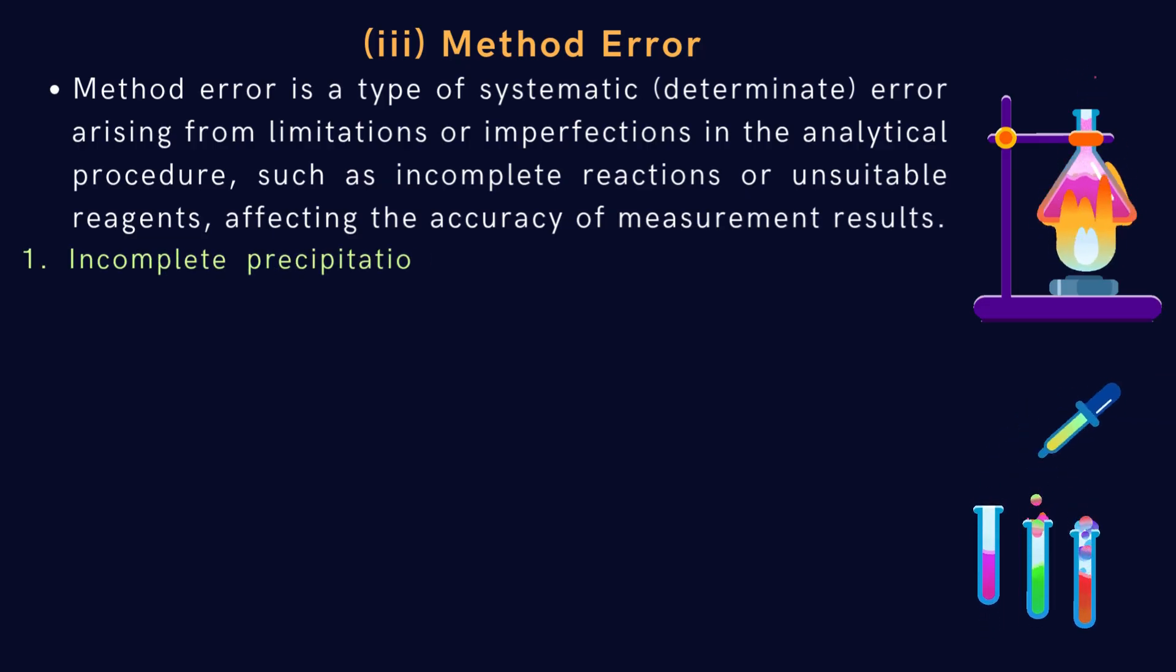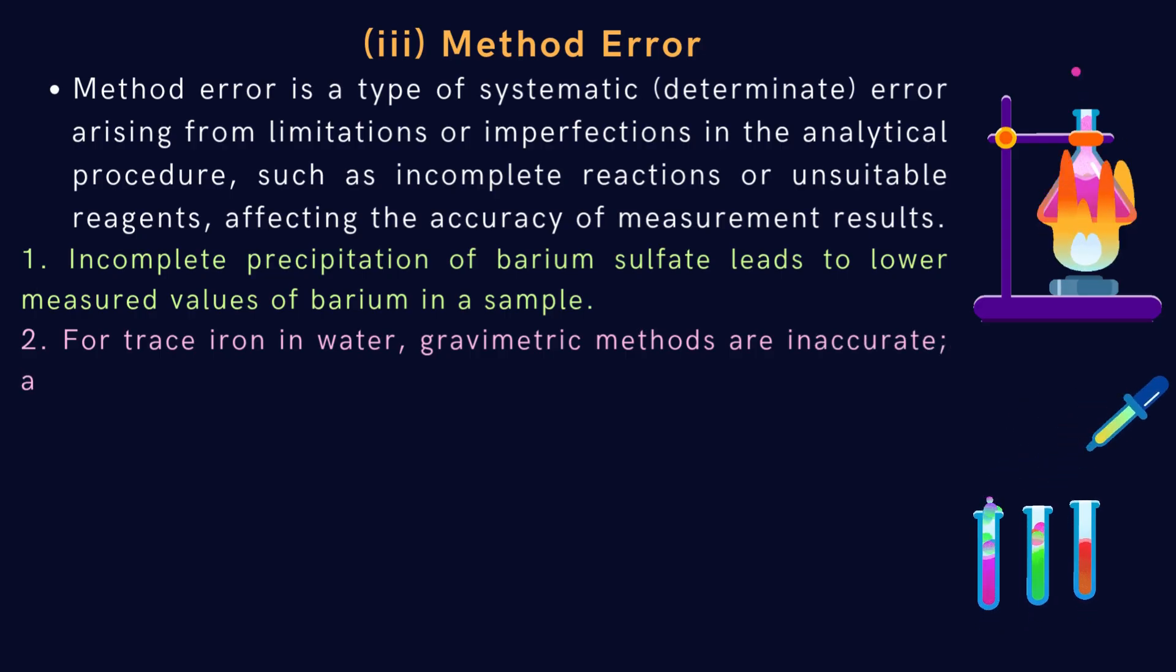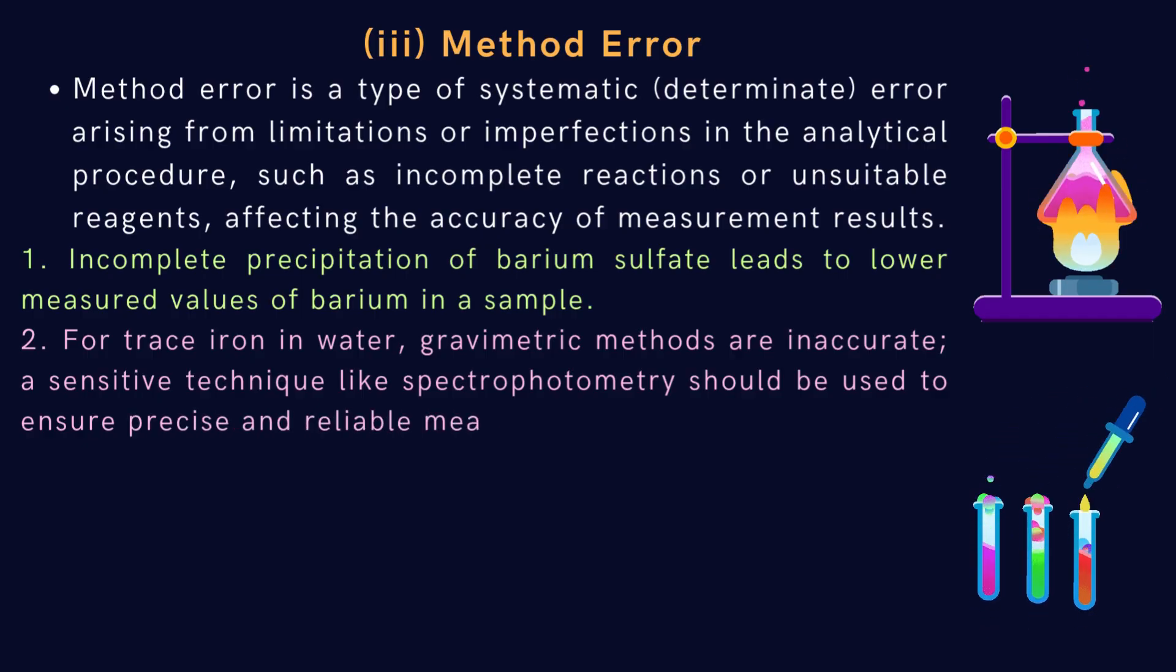First example: incomplete precipitation of barium sulfate leads to lower measured values of barium in a sample. Second example: for trace iron in water, gravimetric methods are inaccurate; a sensitive technique like spectrophotometry should be used to ensure precise and reliable measurement.